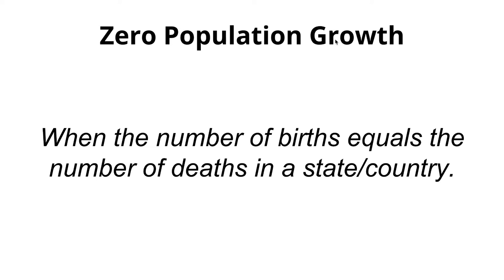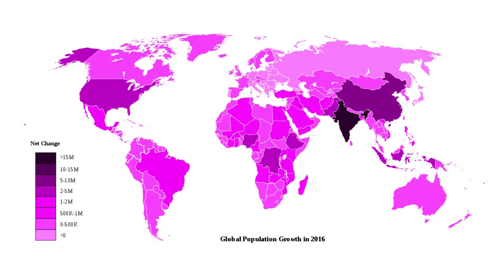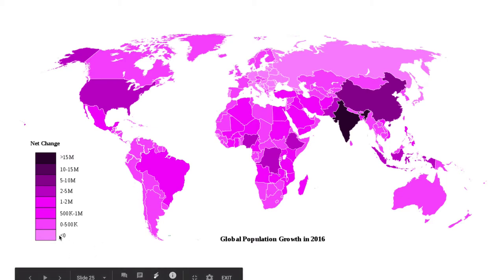Zero population growth occurs when the number of births equals the number of deaths in a country, state, or region. Here on this map, China and India show the highest growth in population, while there are regions in South America where there is literally zero population growth.